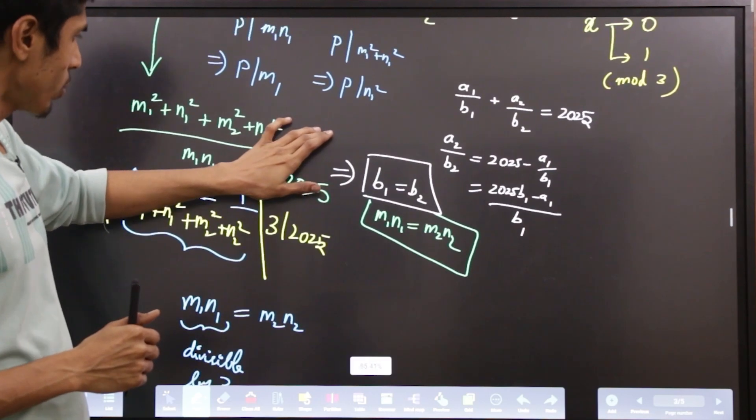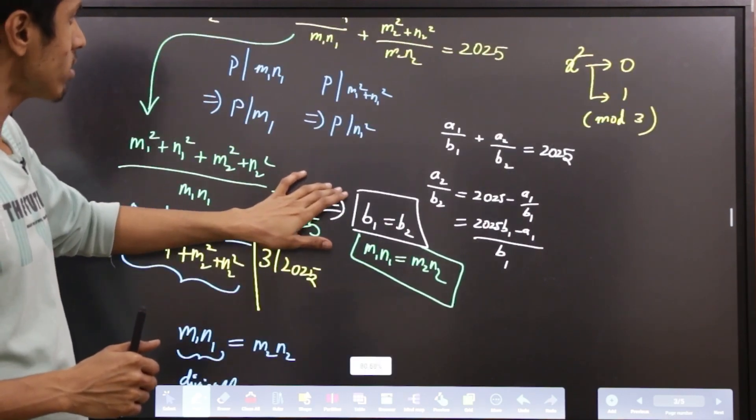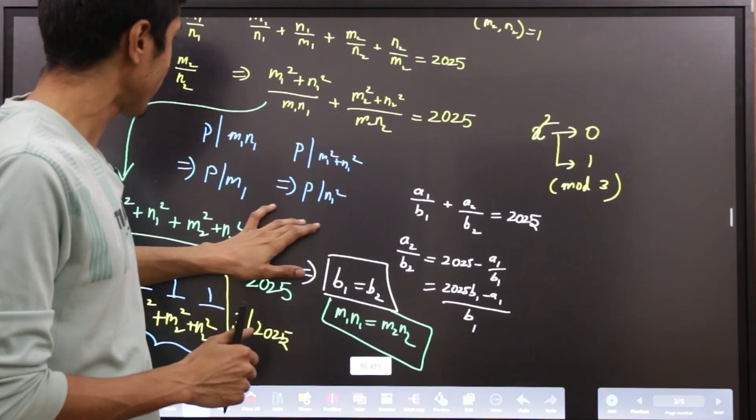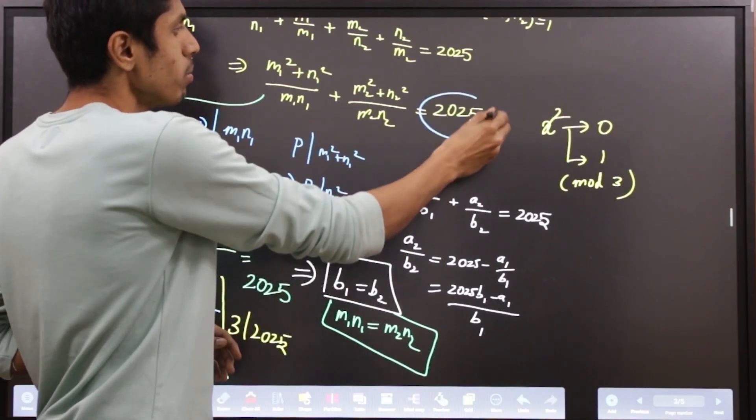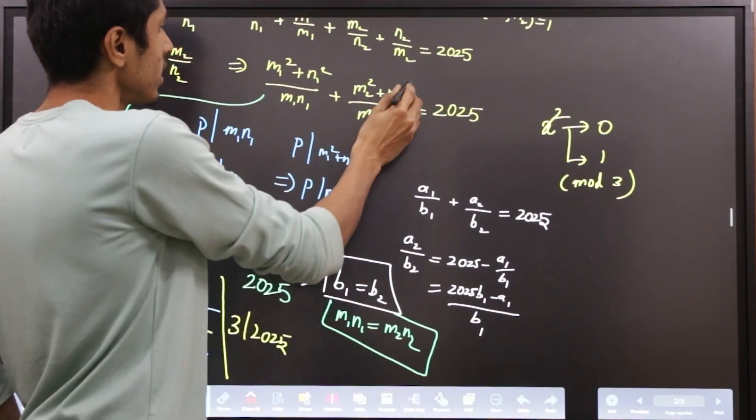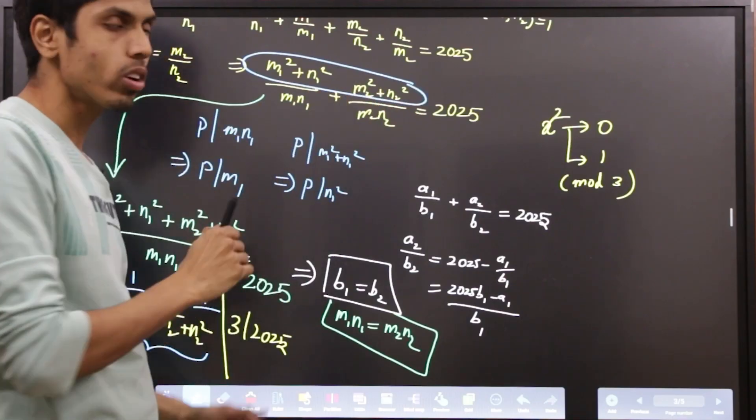Because 2025 is divisible by 3. So we have a certain value that is divisible by 3 in the RHS. But the numerator of the LHS is not divisible.